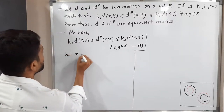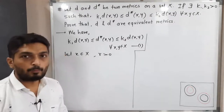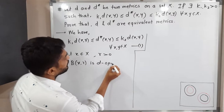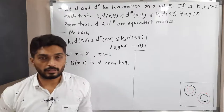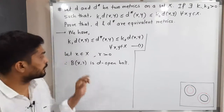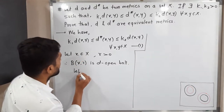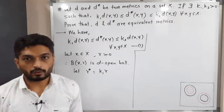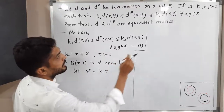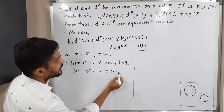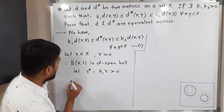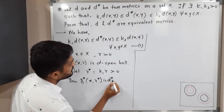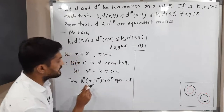Let x belong to X be any arbitrary element and let r > 0 be any positive real number. Then B(x, r) is a d-open ball. We need to find one d*-open ball which is a subset of this one having the same center x. For that, let r* = k1·r. Since k1 > 0 and r > 0, r* is also a positive real number. Then B*(x, r*) is a d*-open ball with the same center x.